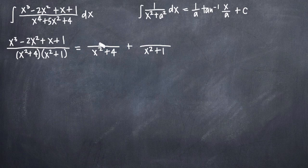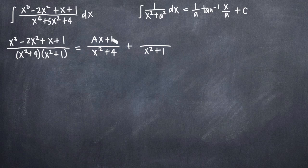Now the question is what do we need to put in the numerator of each of these fractions? When we're dealing with quadratic factors — meaning that the degree of the factor is 2 or greater, so x squared plus 4 is degree 2 — that's a quadratic factor. If it's x to the first power, like x plus 4, that's a linear factor and the process is different. But in this case we have two quadratic factors, and whenever we have a quadratic factor, what we put in the numerator is a constant times x plus another constant. So we'll say Ax plus B for the first fraction, and Cx plus D for the second to distinguish the constants.